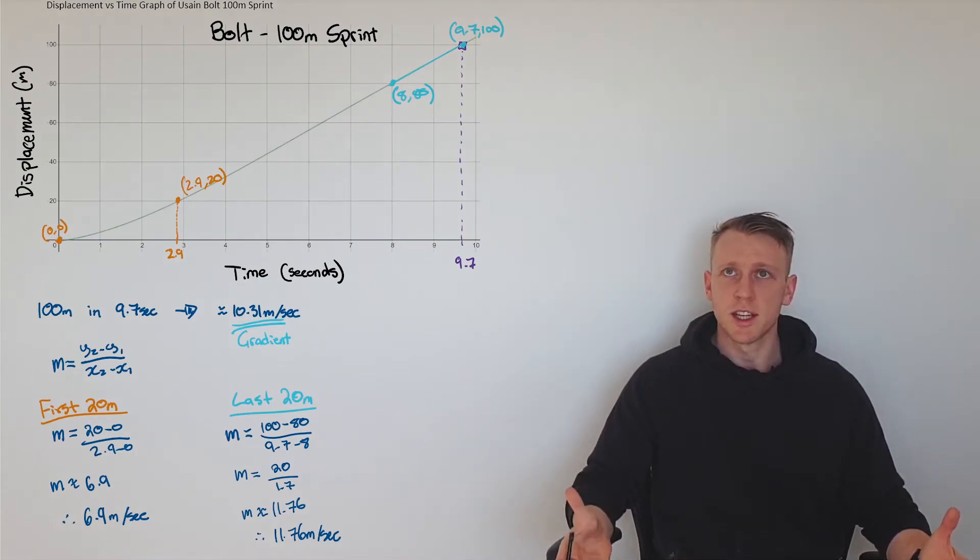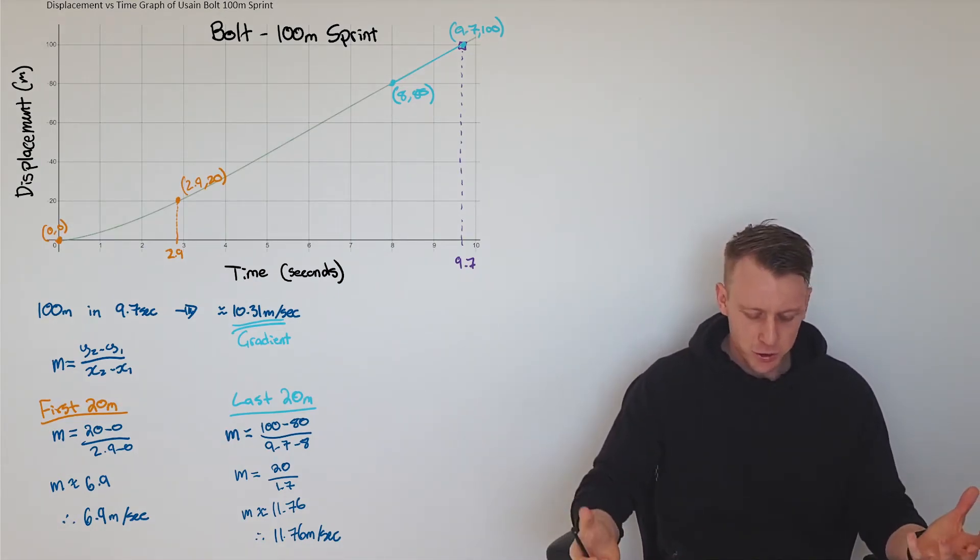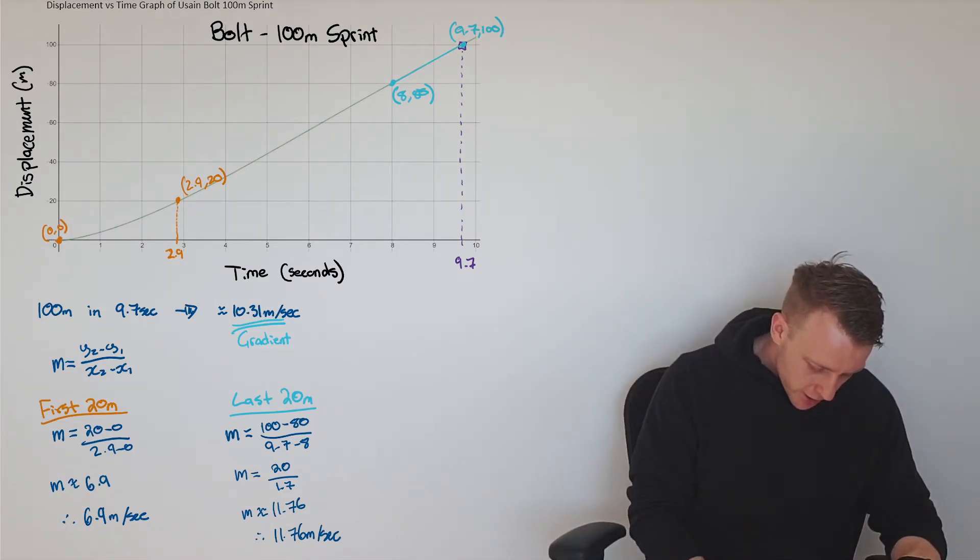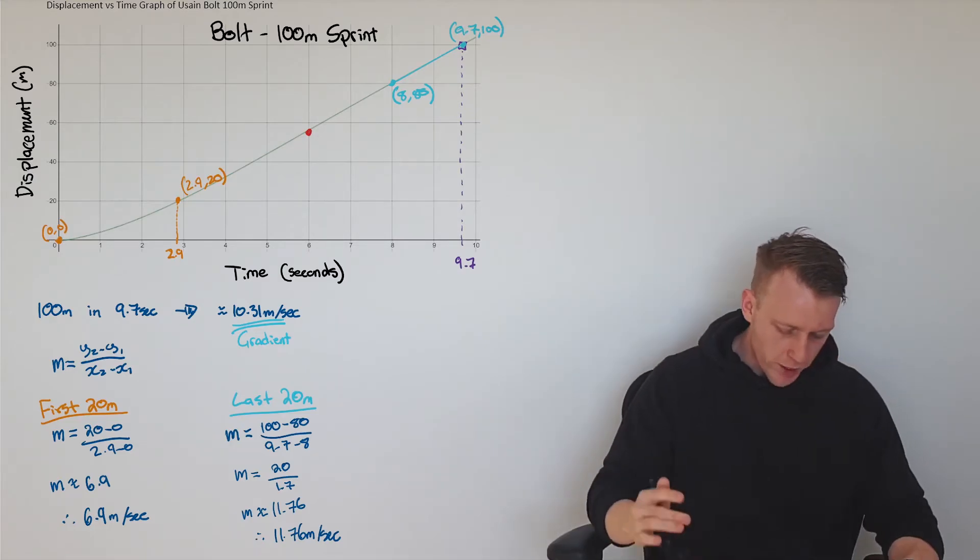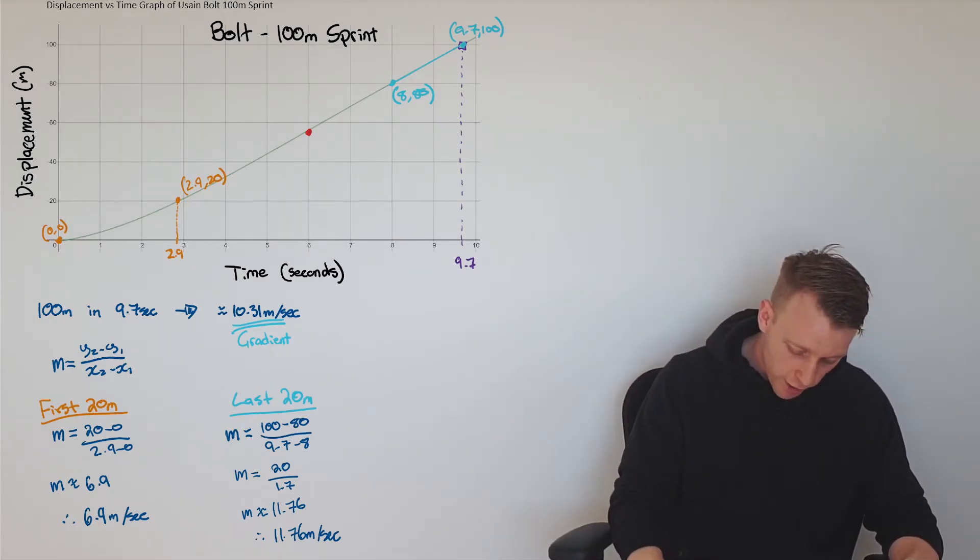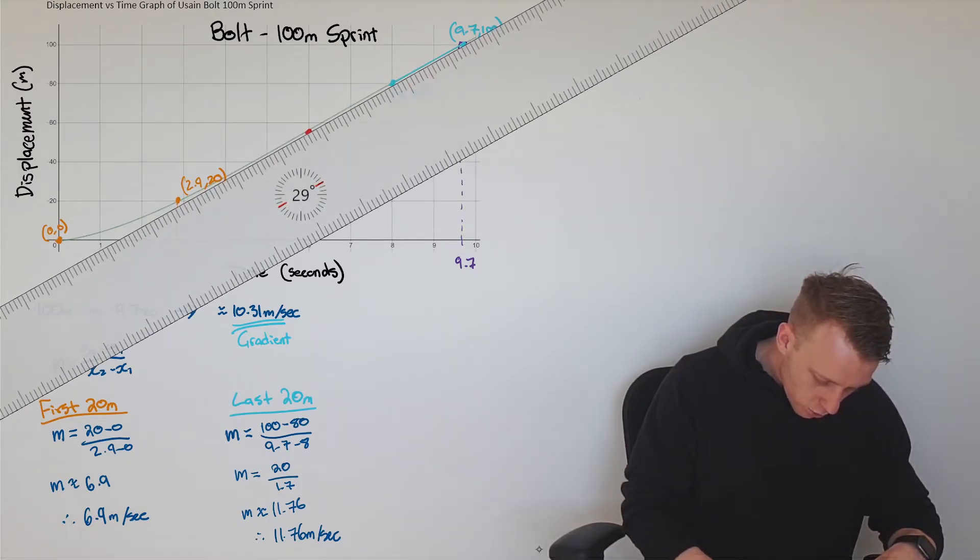Now given that we've looked at these as average speeds, this is not differential calculus. Differential calculus will answer the question: at exactly this particular point, at that one point, I want to know what's his speed, or what is the gradient at that one particular point. Hopefully we can see here what is the building block for differential calculus.